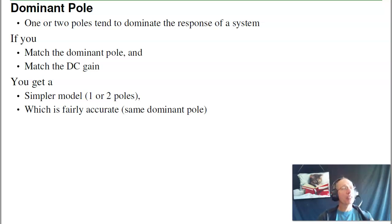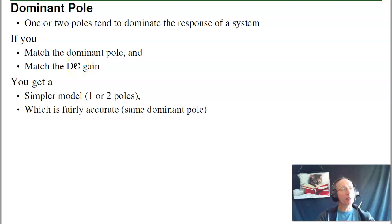The idea is if I match the dominant pole and I match the DC gain, I've got a model that's really pretty good — 80 to 85% correct. Plus it's manageable. If I want to get a more accurate model, that's where you throw it into a computer simulation from MATLAB.